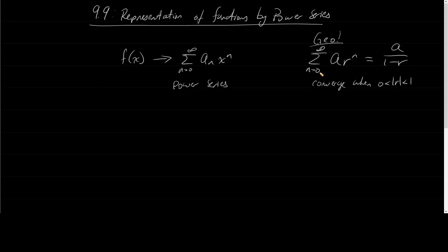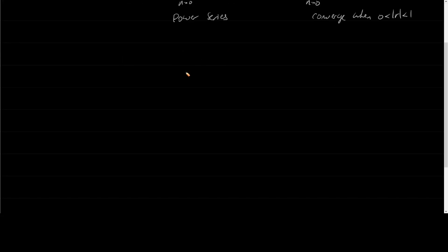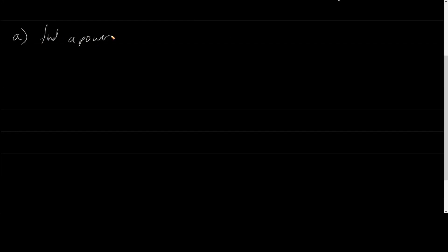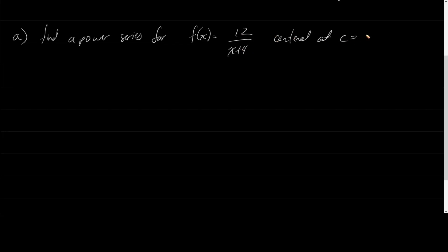When the geometric series converges, it converges to a over 1 minus r. So what we're actually going to be working with here is functions of this format — some sort of fraction that looks like that — to get it into a Power Series. Let's get some examples in. So, A: we're going to find the Power Series for f of x is equal to 12 over x plus 4.